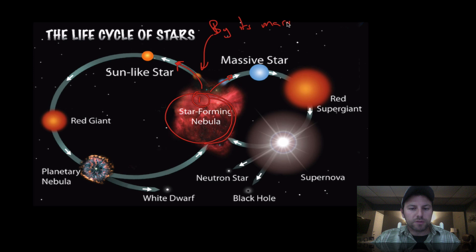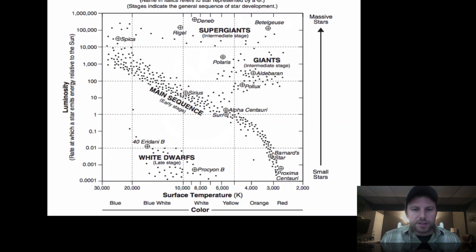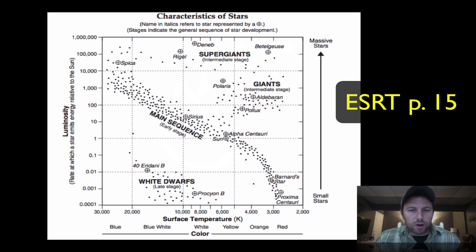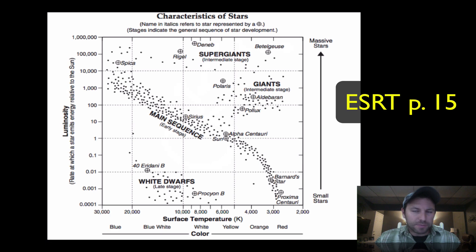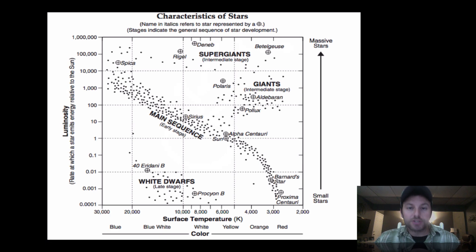Mass is the most important thing with stars — well, second to nuclear fusion. This is in our reference table characteristics of stars chart, and it goes into just the different varieties, the different types of stars that we'll see. We're going to go through this a couple more times, but just so you see it, this is in our reference table to help us out a little bit.